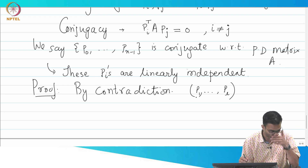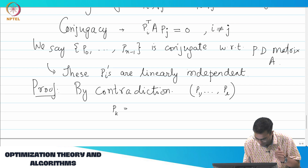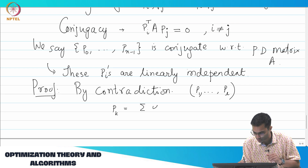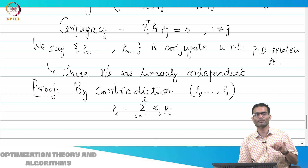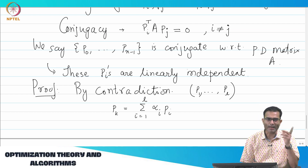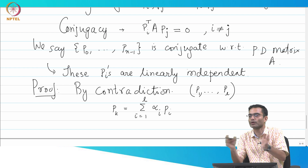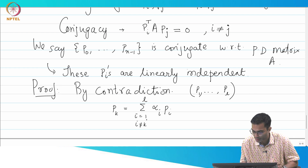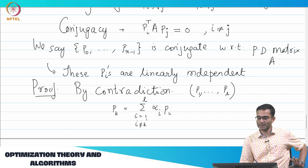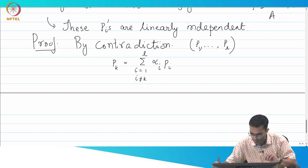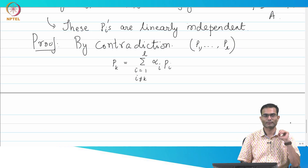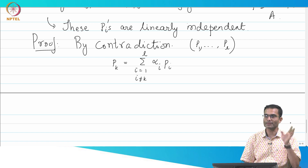So that simply means that if I take some PK, it can be written as a linear combination: sum of alpha_i times P_i, where i runs from 1 to L and i is not equal to K — because I want to write PK in terms of all other vectors, so I exclude K from the summation. This is the case if PK is linearly dependent.